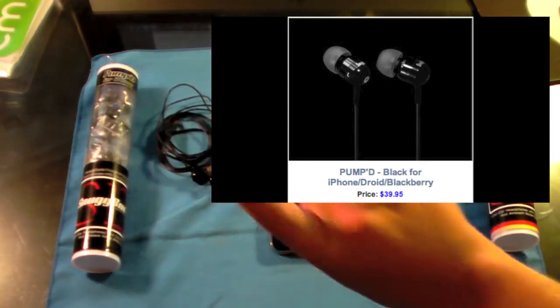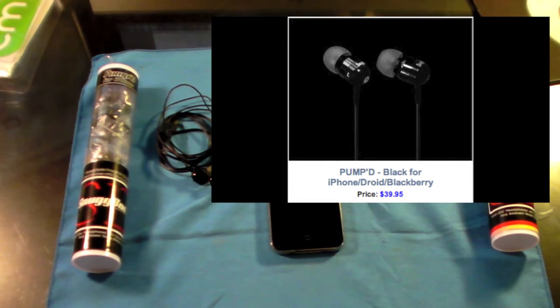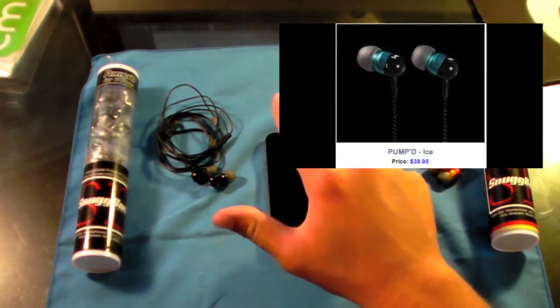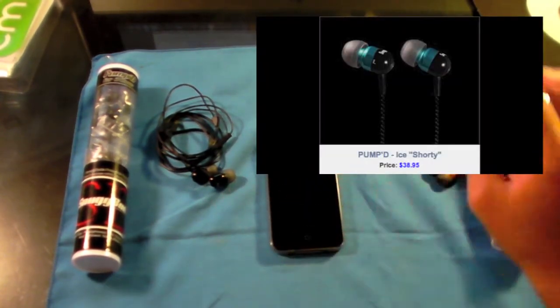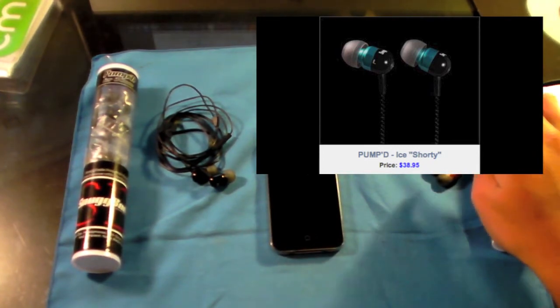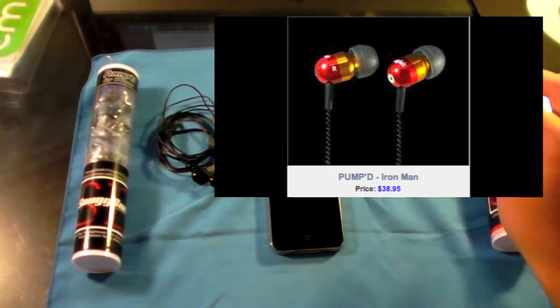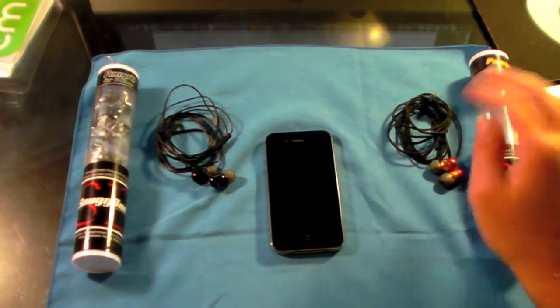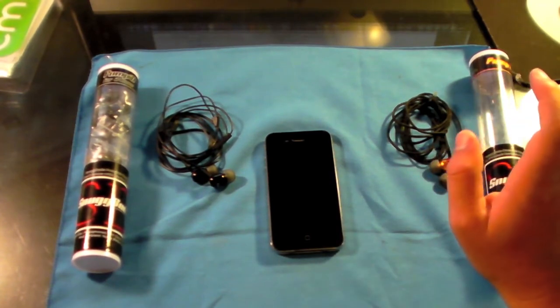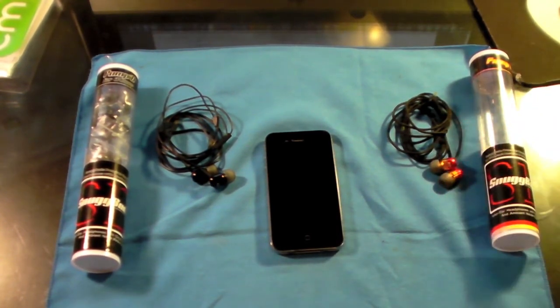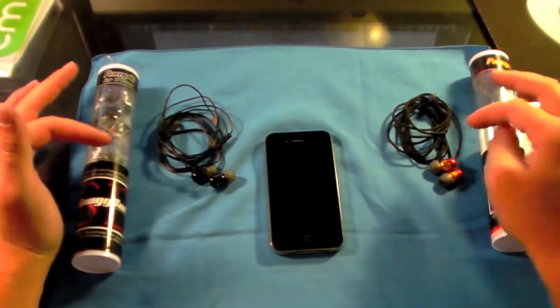You can also get the Pumped Ice, the Pumped Shorty, or the Pumped Ironman. The Ironman looks really cool, as do the Ice and Shorty. I'm going to be reviewing these two, but they're basically the same. Those will all run you $38.95 - five different options, five great different headphones.